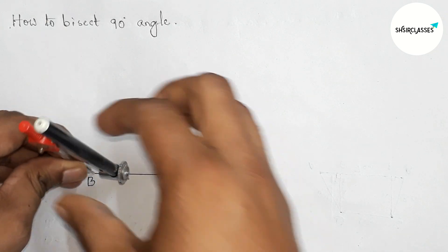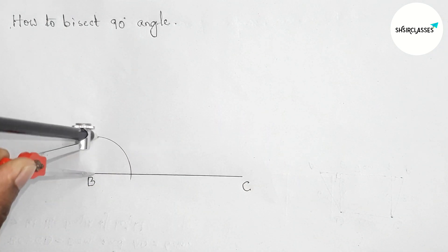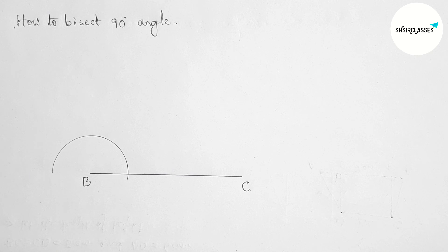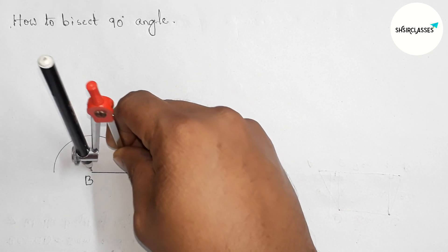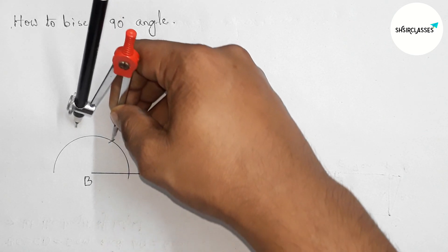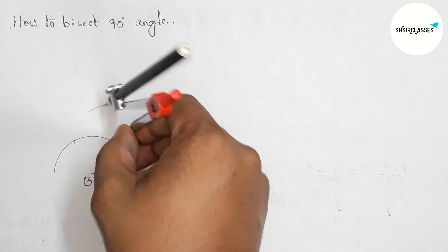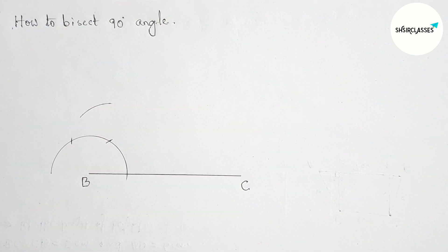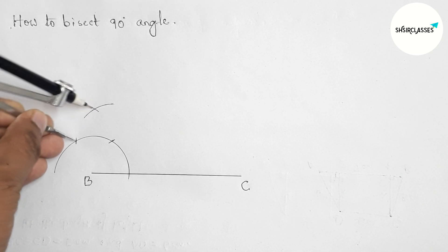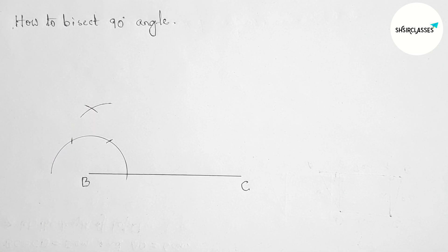Putting the compass on point B, taking any radius and drawing an arc by this way. Now putting the compass here, taking the same length and cut here. Putting the compass here with the same length and cut here. Drawing an arc here again with the same length, putting the compass here and cut here.